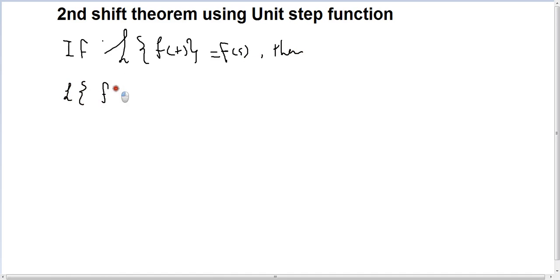Laplace of F of T minus C, multiply by U of T minus C, the shift. This is equal to exponential to minus CS, multiply by Laplace of the function.